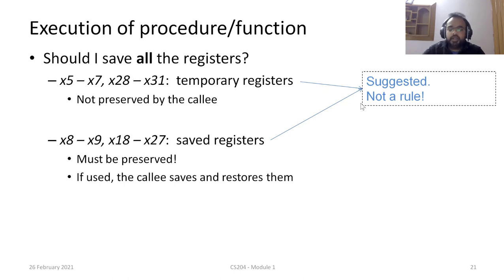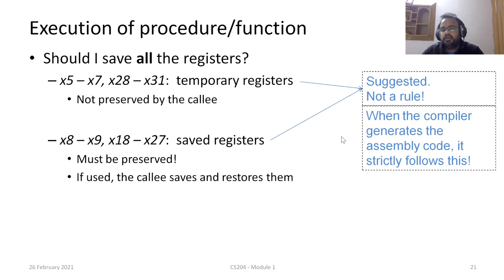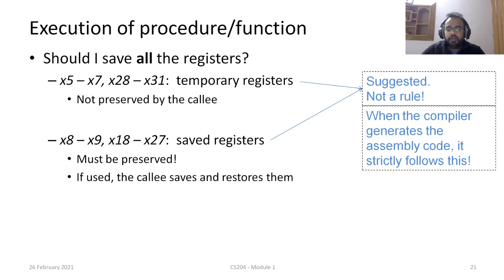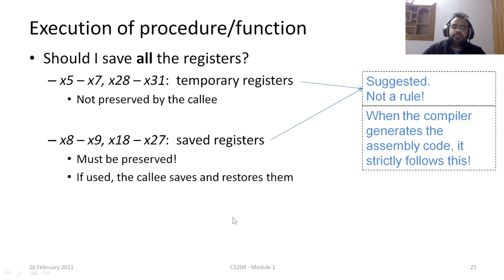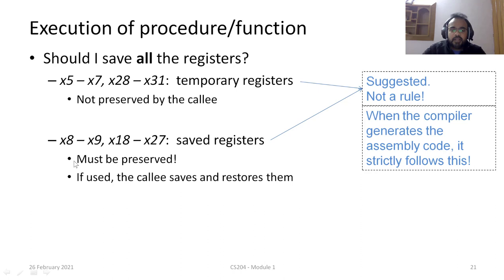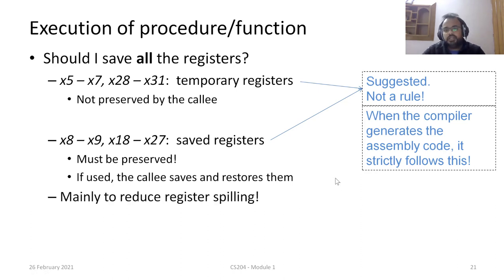This is a standard convention — not a hard and fast rule, but any standard compiler built for RISC-V will follow these guidelines. I suggest you do the same: if you are using registers X5, X6, X7, save them onto the stack before the function call and restore them after. But if you are using the saved registers X8, X9, X18–X27, do the save and restore within the function itself, since those are the callee's responsibility.